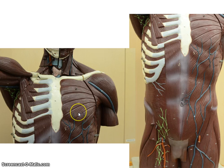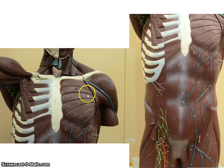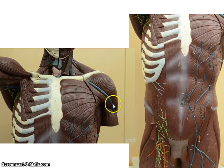I'm going to go through the anterior trunk muscles that you have listed in your lab packet. I'm going to use this picture as well as this picture which comes from the cadaver abdomen. Let's start with the deltoid. The deltoid muscle is located here — it's actually a pretty large muscle that attaches on that deltoid tuberosity you learned about in bones.